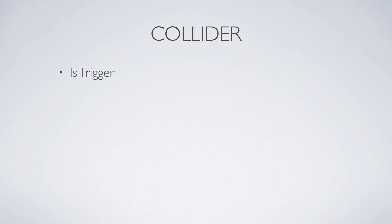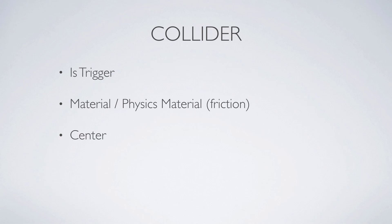Let's have a look at something that each collider has. There is something called isTrigger which allows us to make an object a trigger — we'll have a closer look at triggers in the next slide. Then you have something called material, which is a physics material that adds things like friction or bounciness to our object. Then we have the center, which is simply the center of our collider, and the radius which is for the sphere — so if you want to change the size of the collider of a sphere you would have to change the radius.